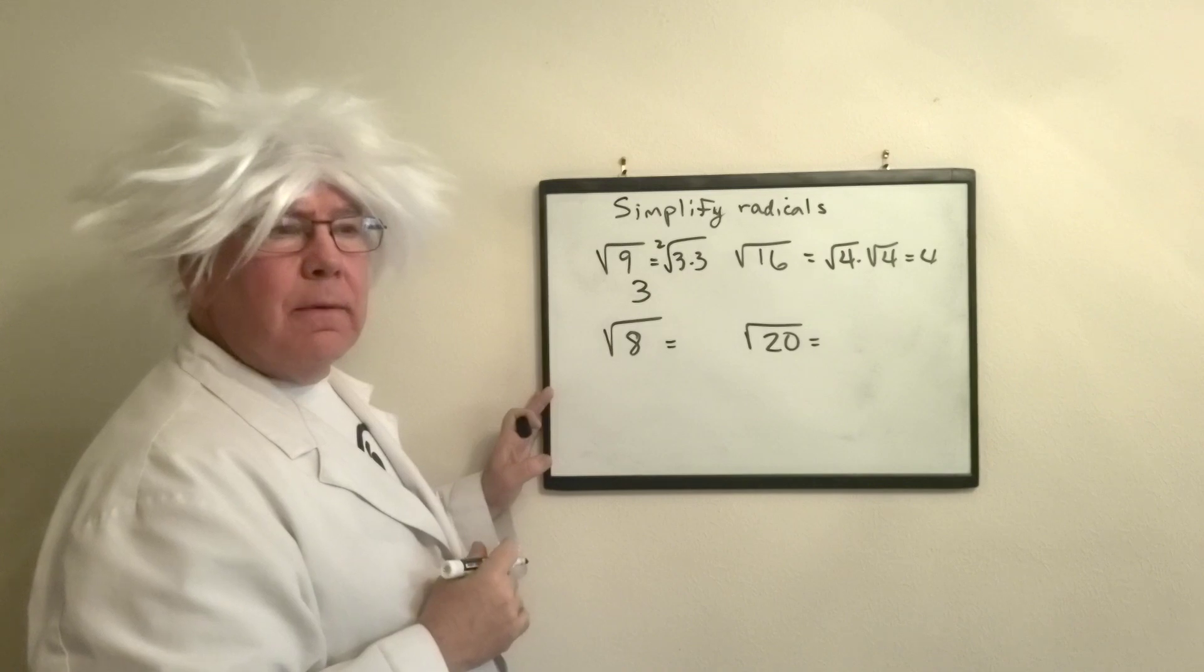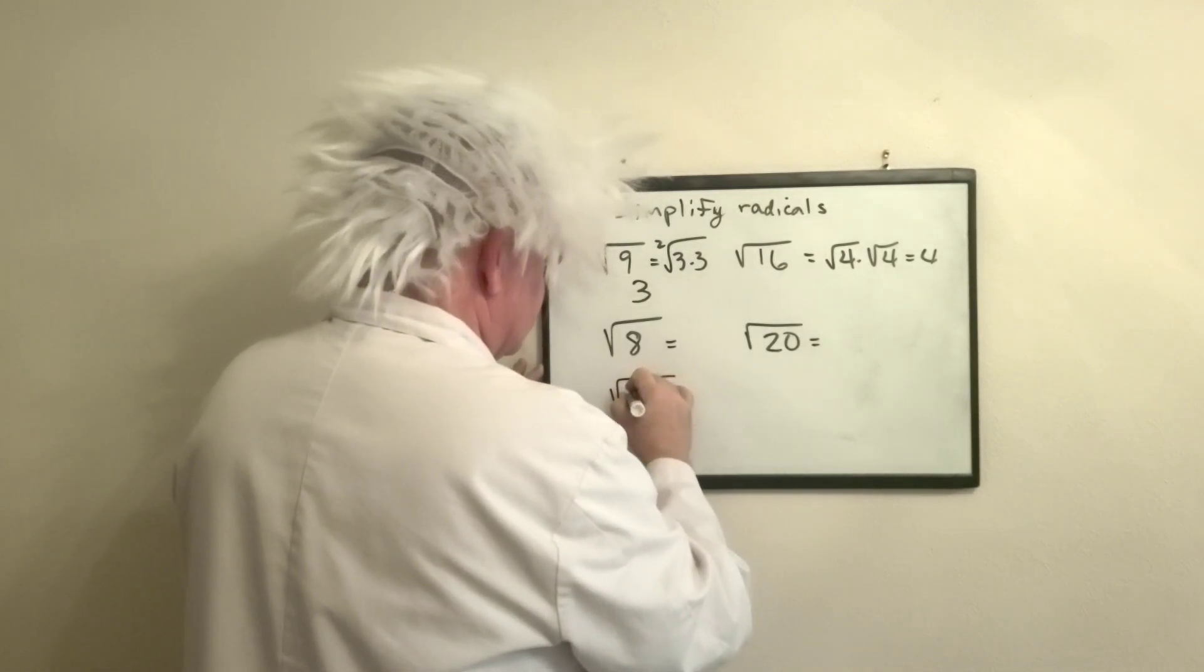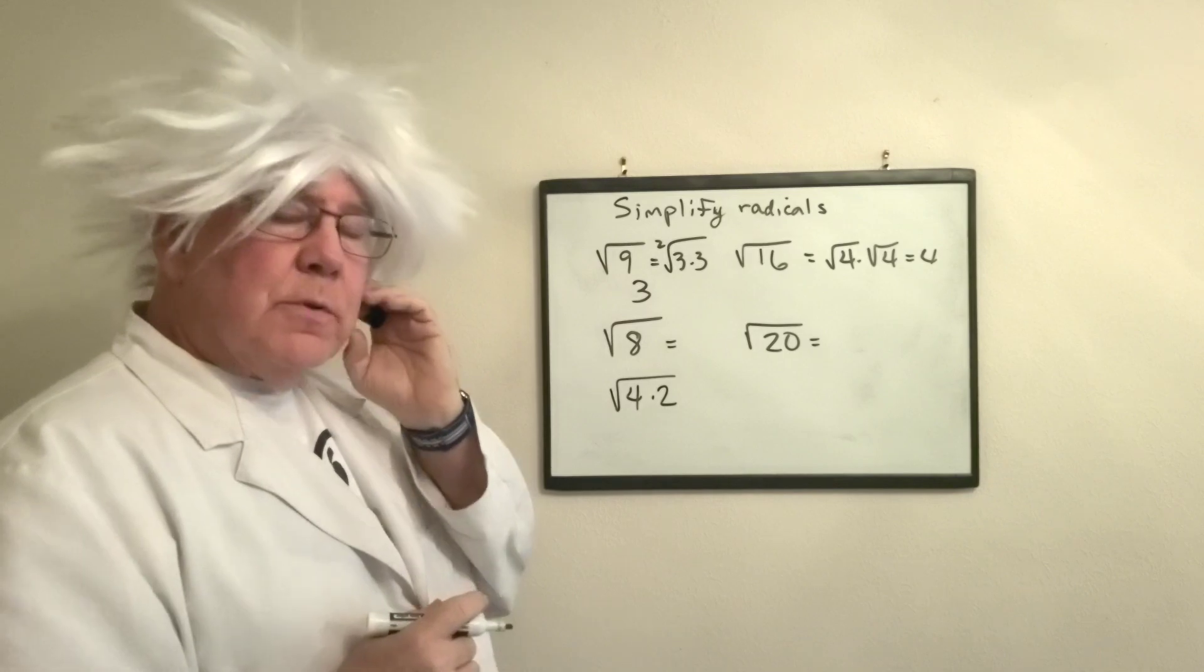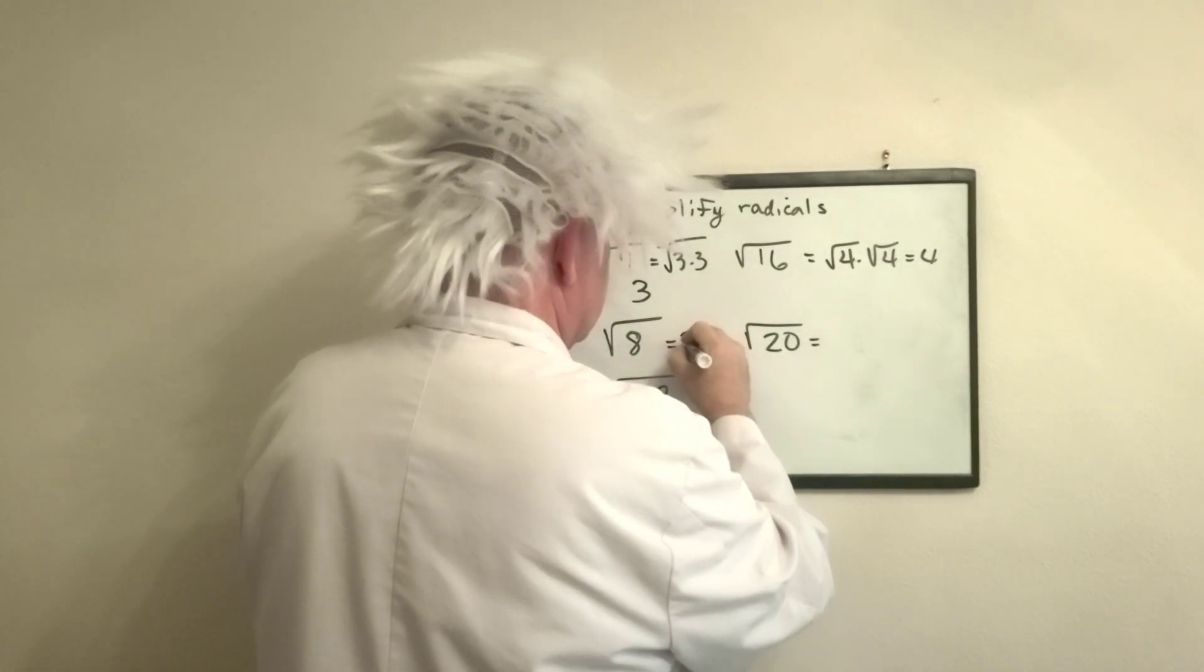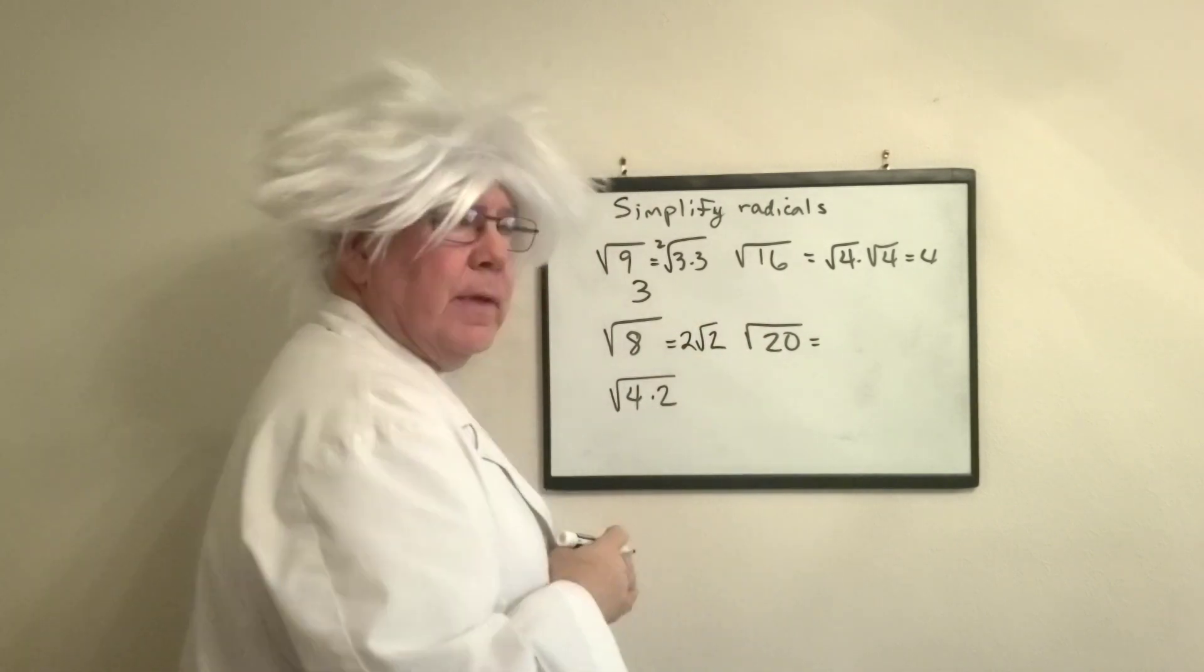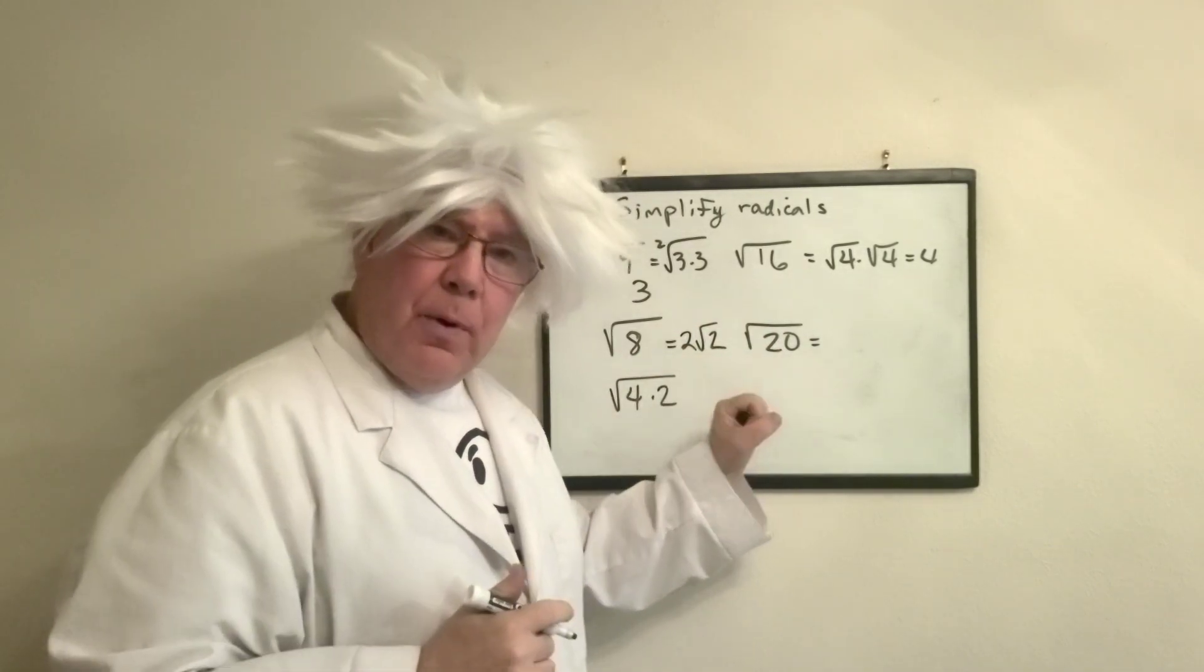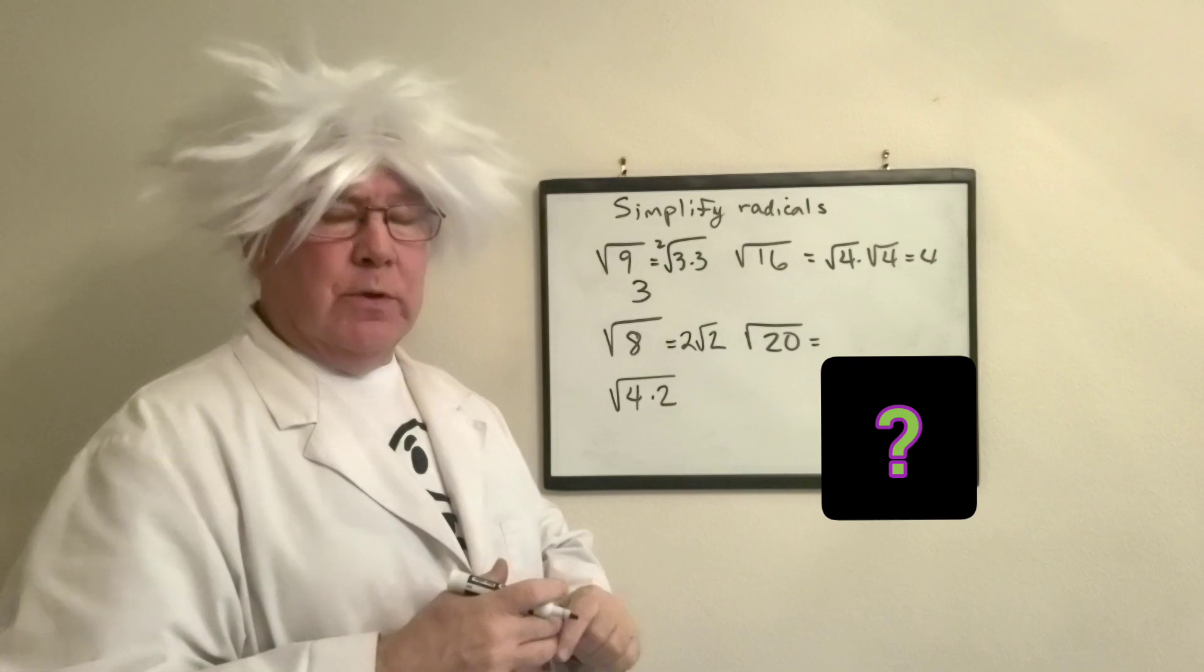Well, it just so happens there's my number over there. So we're going to say the square root of four times the square root of two. So we take the square root of four and we get two square root of two. Now I would like for you to pause the video and try to do the square root of twenty.